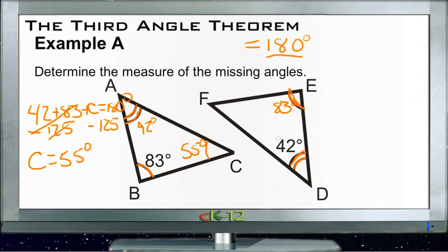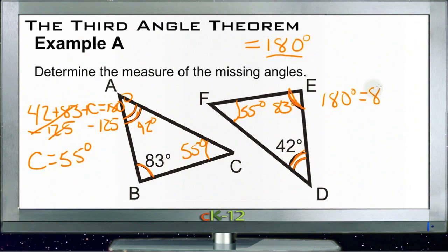Since the other two angle pairs are congruent, angle F must also be 55 degrees. We can verify that by doing the same calculation: 180 degrees has to be the total of angles F, E, and D, so it must be 83 degrees plus 42 degrees plus angle F. That confirms the result, since we just did the same math on the other side.